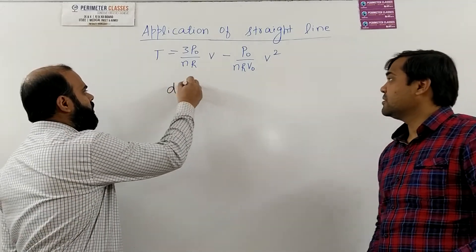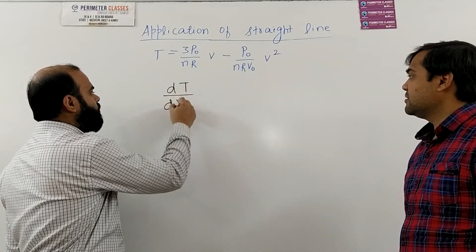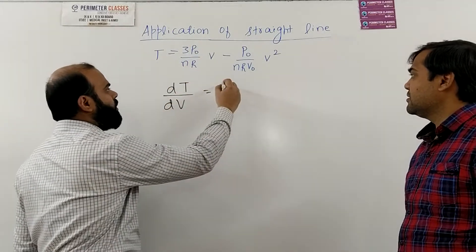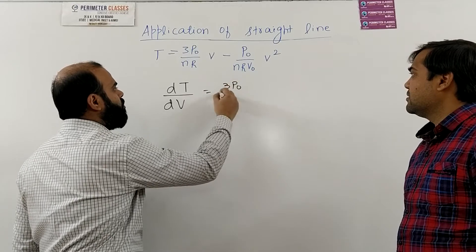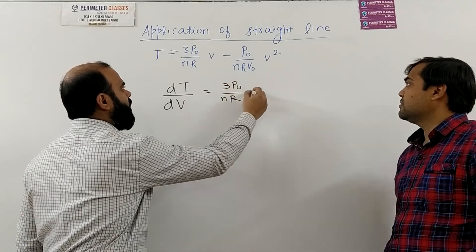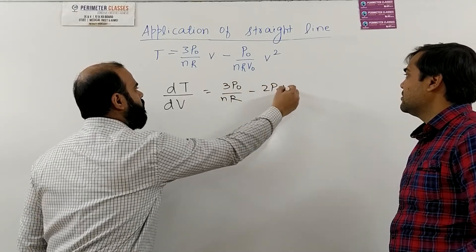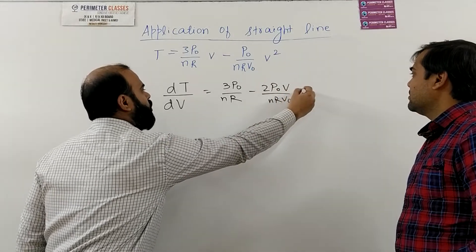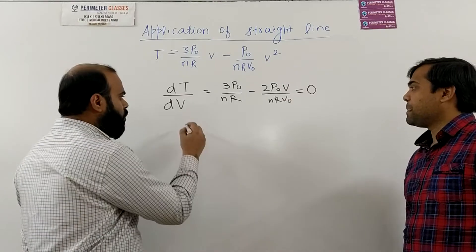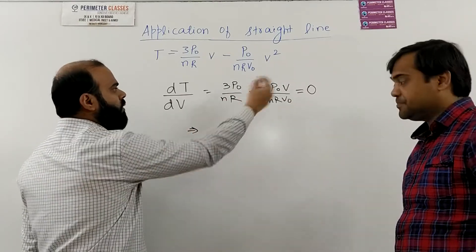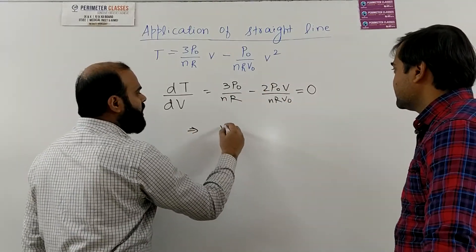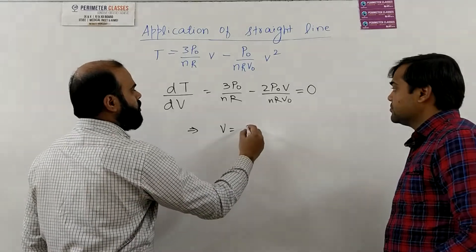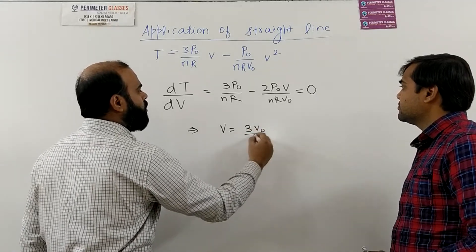So what we were supposed to do here was differentiate T with respect to V and when we do this it will become 3P0 by nR minus 2P0 V by nR V0 and we have to equate it to 0. So what you will get after solving this you will get that V is equal to 3V0 upon 2.